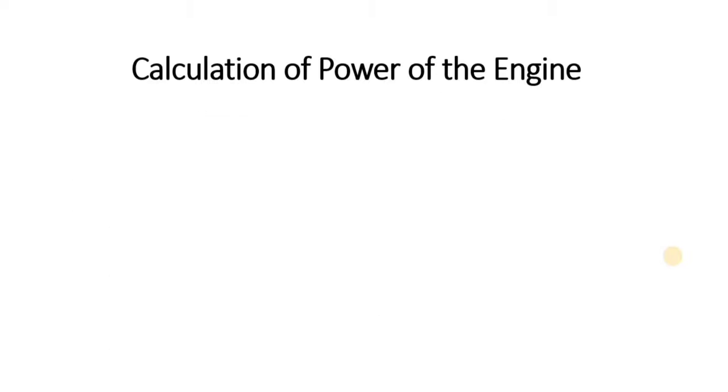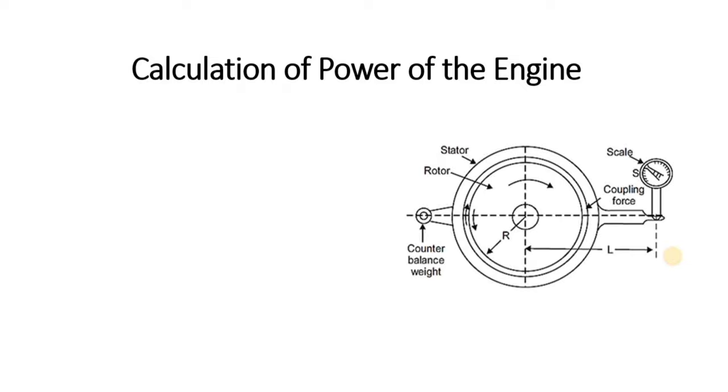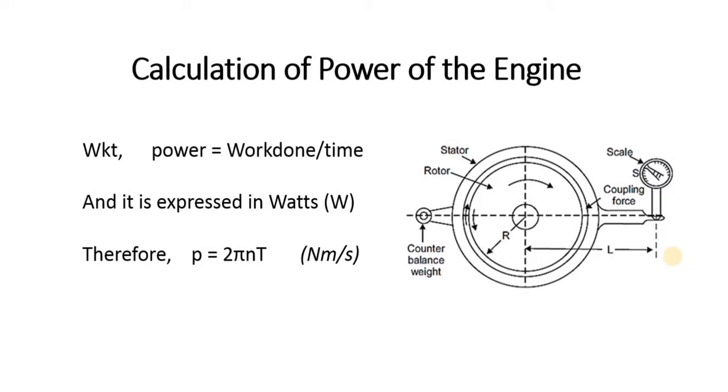We can now calculate the power of the engine. We know that power equals work done per time and it is expressed in watts. So the previously calculated 2πNT can be called as power.